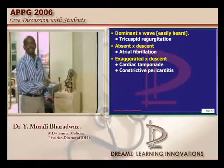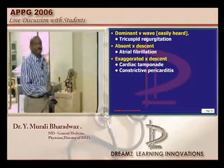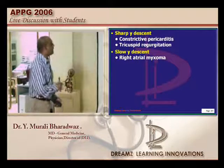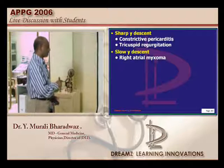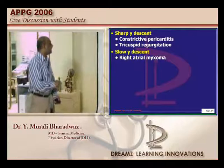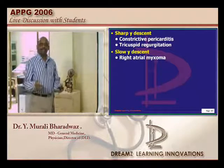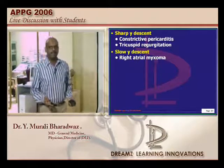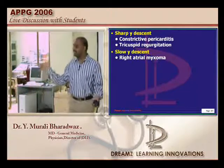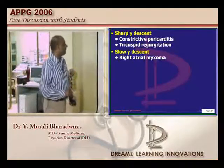X descent, sharp Y descent, and slow Y descent — three conditions commonly asked in entrance exams. In cardiac tamponade and constrictive pericarditis you will come across exaggerated X descent. In tricuspid regurgitation and constrictive pericarditis, sharp Y descent is seen. In right atrial myxoma, slow Y descent is seen. In constrictive pericarditis, both X descent and Y descent are exaggerated because the heart is prevented from filling at any time — hence both become much sharper.